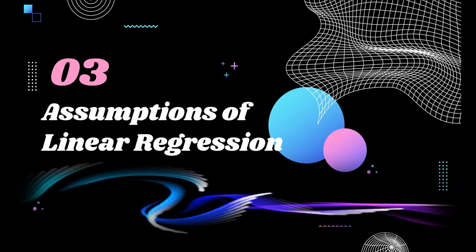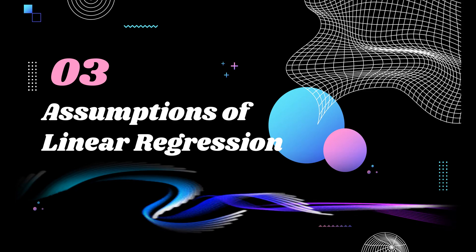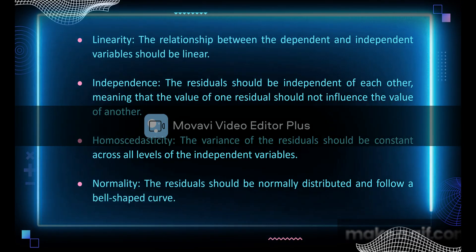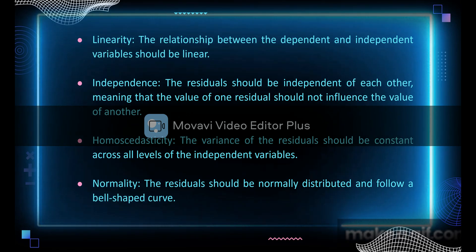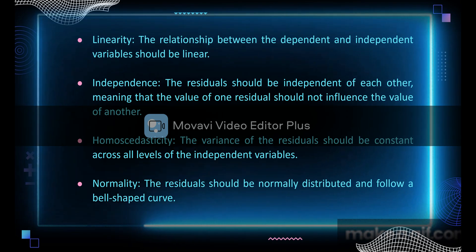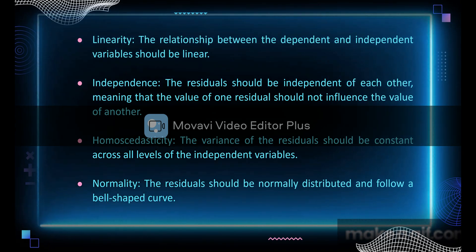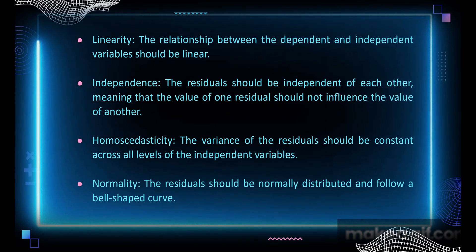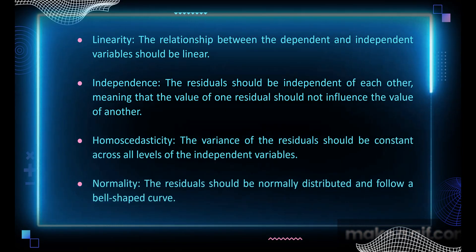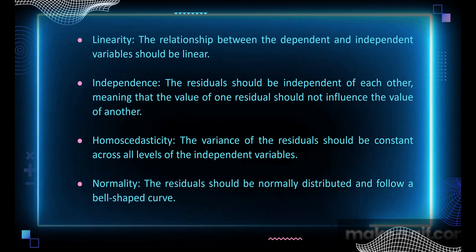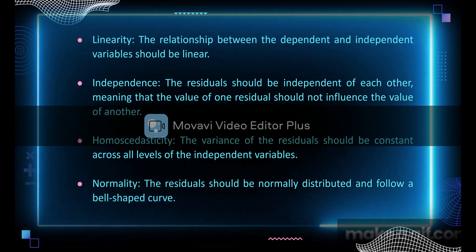The assumptions of linear regression are as follows. The relationship between the dependent and independent variable should be linear. The residuals should be independent of each other, meaning that the value of one residual should not influence the value of another. The variance of residuals should be constant across all levels of independent variables. The residuals should be normally distributed and follow a bell-shaped curve.